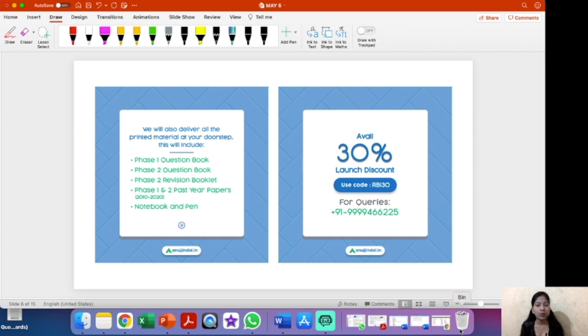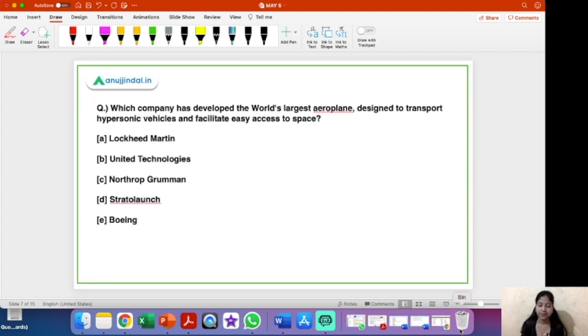Now, if you want to avail this course, then you can avail a 30% discount by using the RBI30 coupon code. In case you have any further queries related to the course, then do feel free to ask us on this number, which is right in front of you. So here the introduction ends and the video begins.